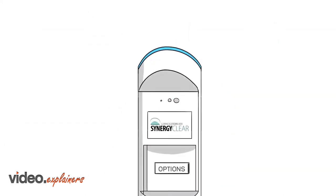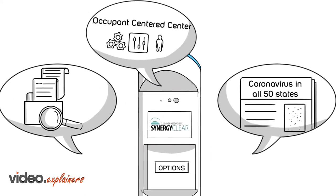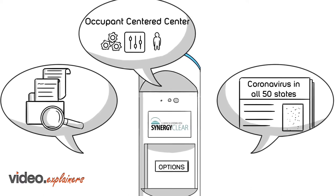In office settings, Synergy Clear can provide an information directory of business happenings in the building, local and national broadcast news.